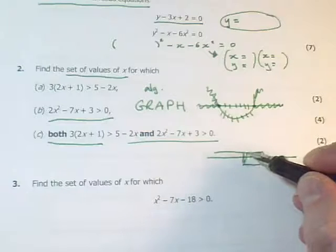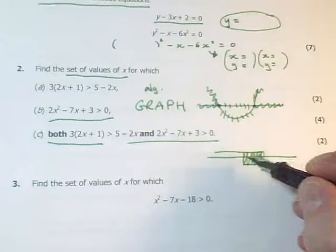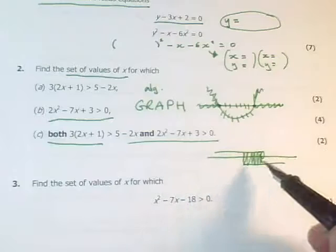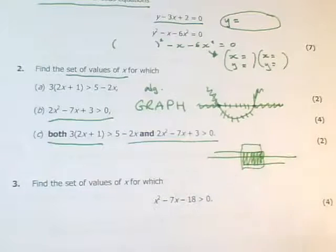Then if they're both true, they'll be both true on the portions of the number line where both of the original inequalities were true. Where the lines double up, where the solutions double up, these are the ranges you need to describe. There may be one range or there may be two ranges.